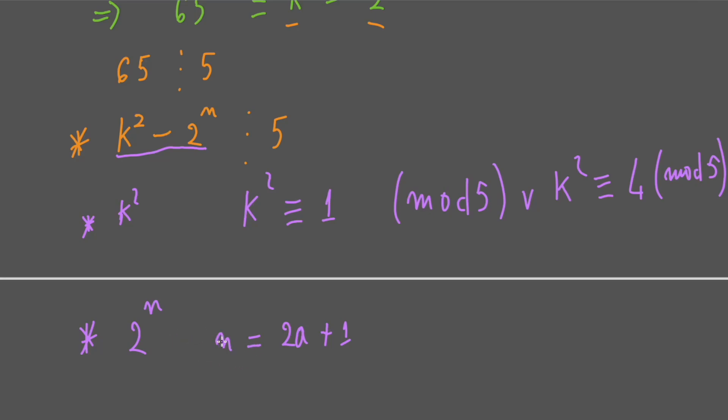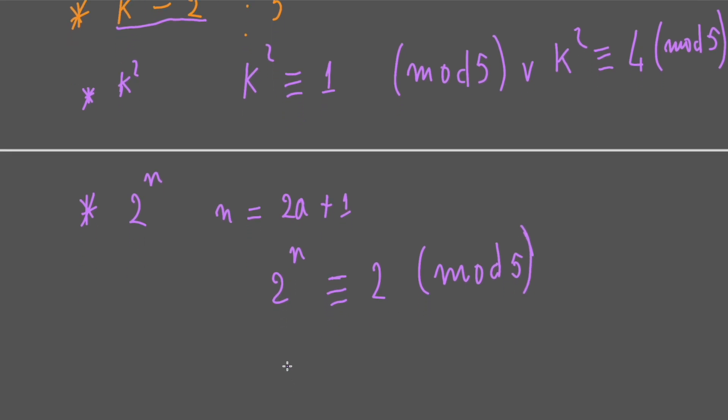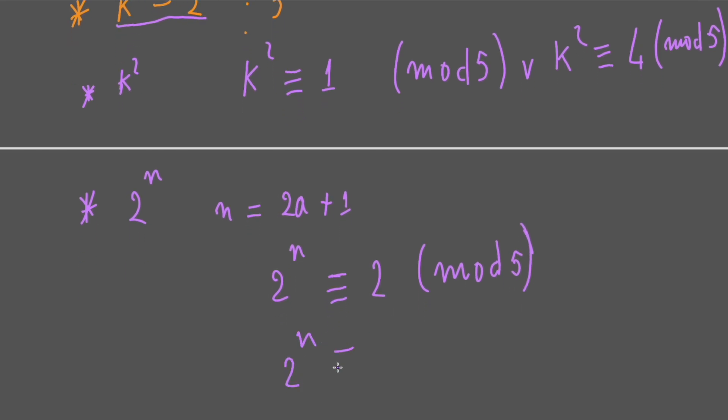But now we have to check the case n is the odd number. And if n is odd number then 2^n will be congruent to 2 mod 5, or 2^n congruent to 3 mod 5.